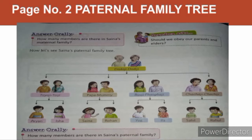Now let's see Sina's Paternal Family Tree. The paternal family tree begins with Dadaji and Dadiji. Dadaji and Dadiji have 4 children: Tayaji, Taiji, Papa and Mummy — meaning Sina's parents — Buaji, Fufaji, Chachaji and Chachiji. Now the next generation comes.